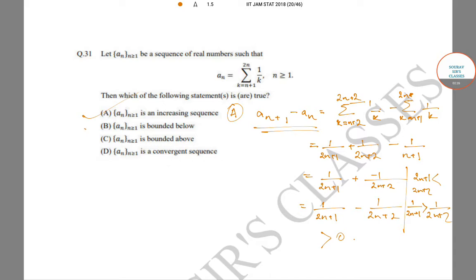Since a_n is a sum of positive terms, a_n is always bounded below by 0. This is an obvious statement, so statement B is also correct. What we need to find is whether it is bounded above.